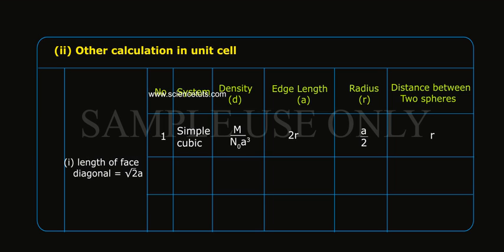Length of face diagonal equals root 2a. Number 2, System FCC, density d equals 4M by N₀a³, edge length a equals 4R by root 2, radius R equals a by 2 root 2, distance between two spheres equals a by root 2.